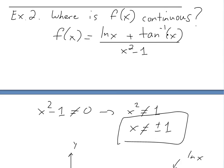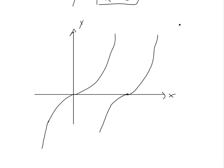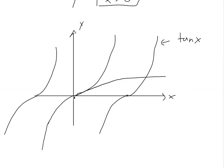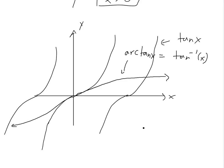Now if we look at arctan: tan x repeats everywhere with vertical asymptotes, but arctan is just the inverse of it. It looks like a smooth S-curve going all the way across — that's arctan(x), also written as tan inverse of x. As you can see, it's a smooth curved line all the way across, and it's continuous everywhere.